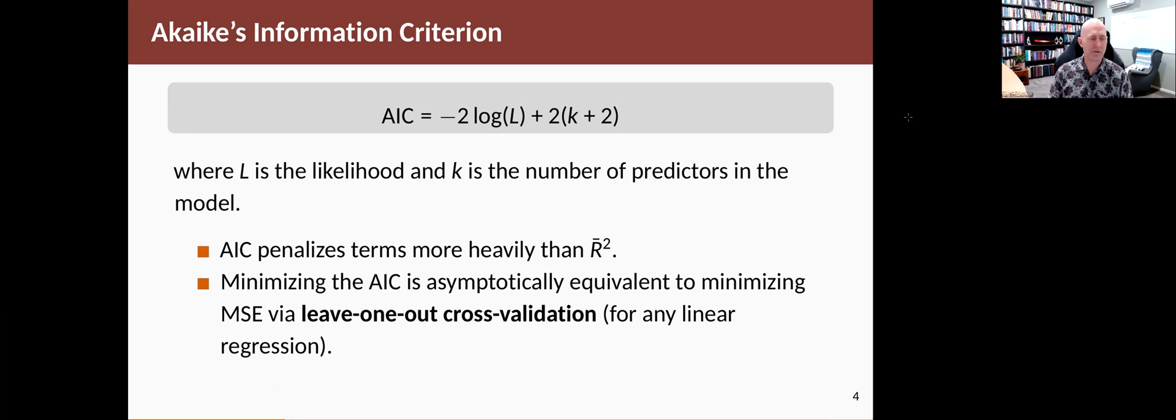So minimizing the AIC will generally end up with a model either the same or smaller than the one you would get if you maximize adjusted R².